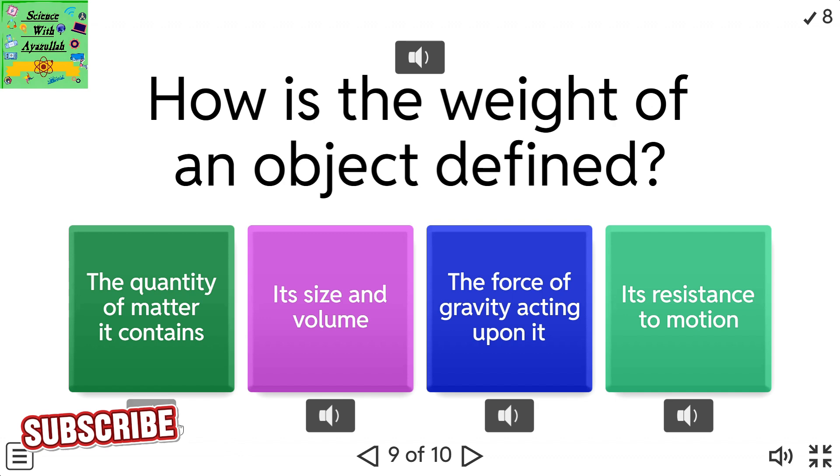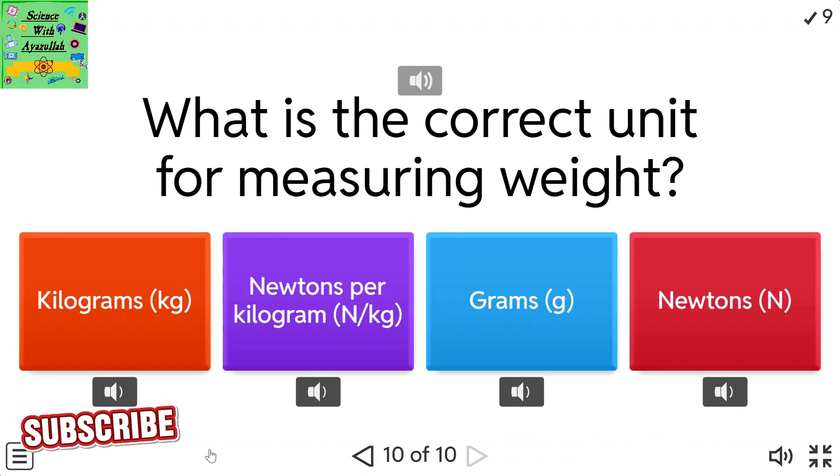How is the weight of an object defined? The quantity of matter it contains. Its size and volume. The force of gravity acting upon it. Its resistance to motion.